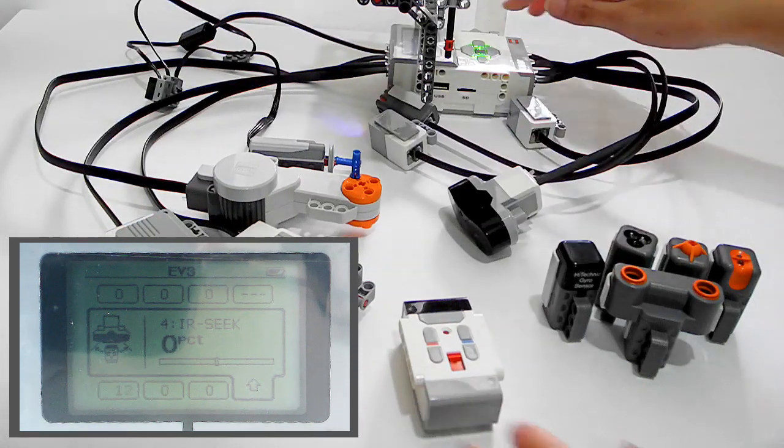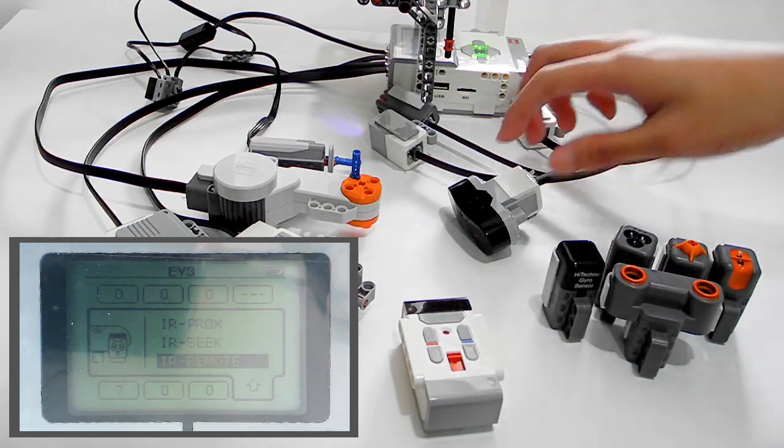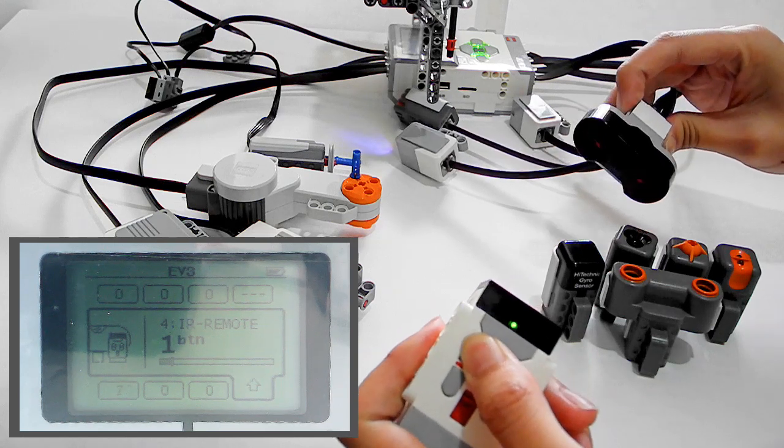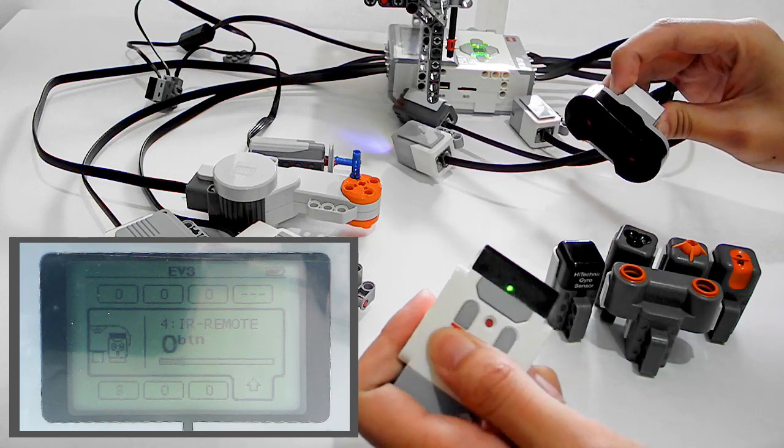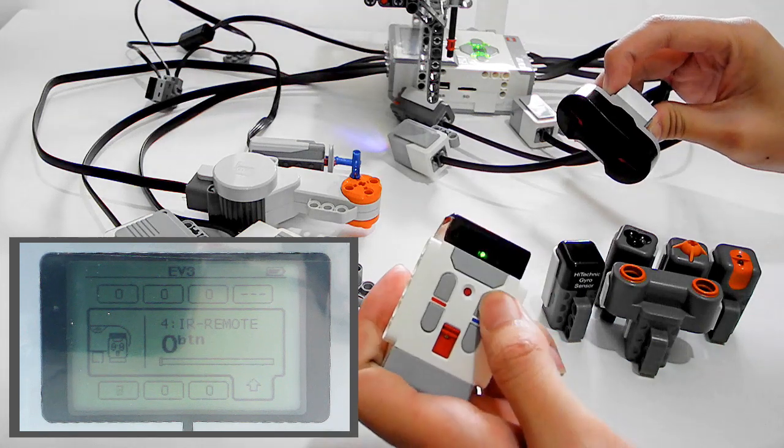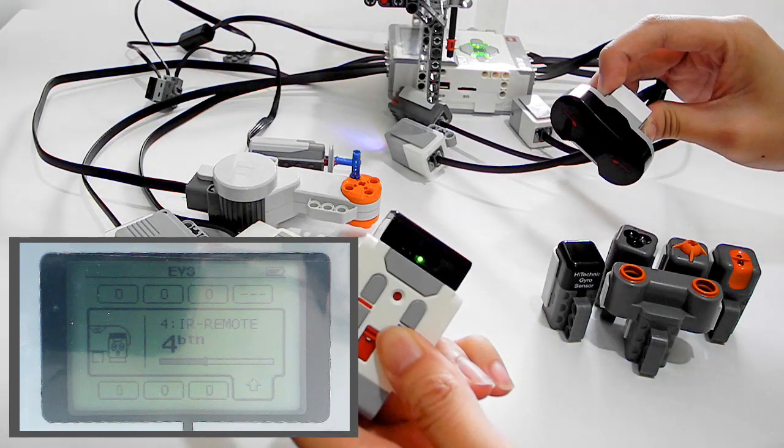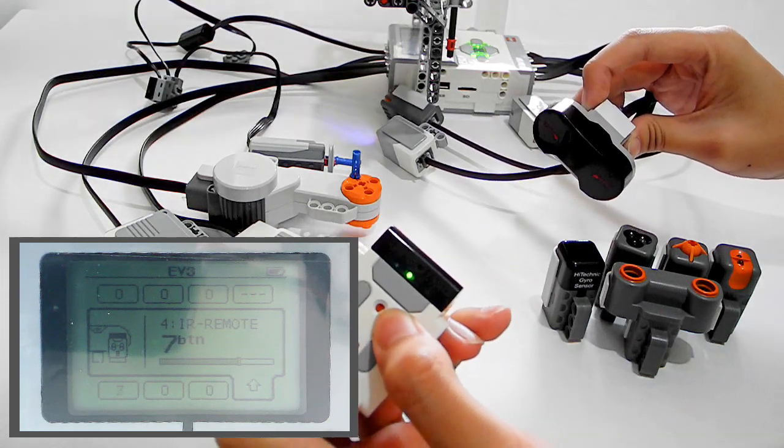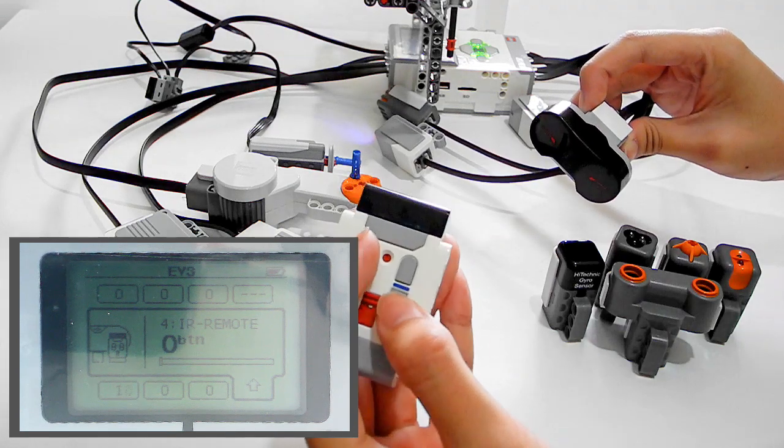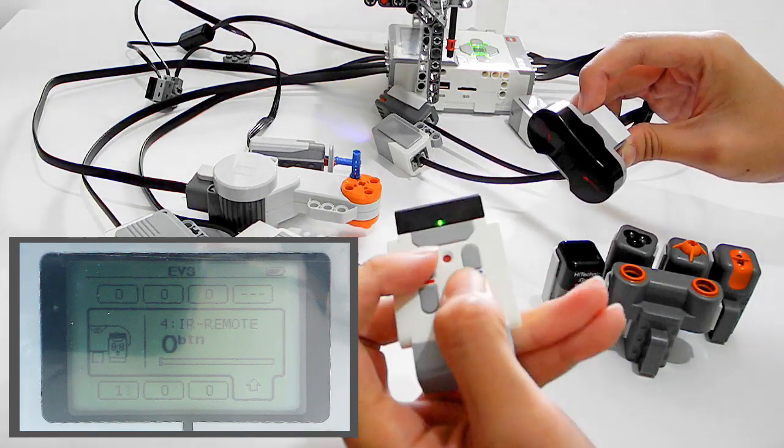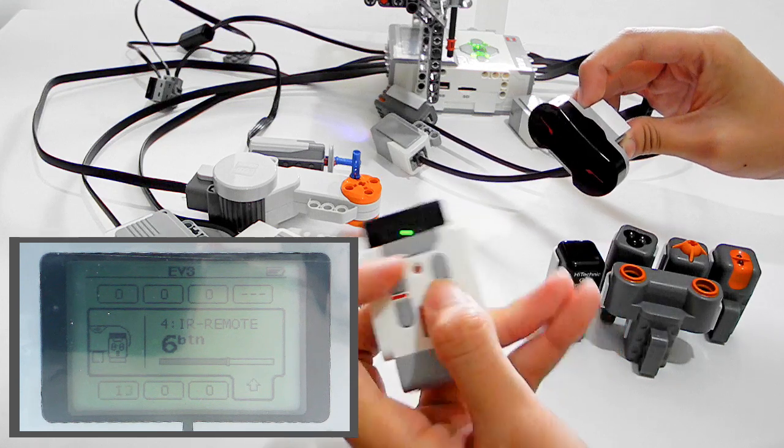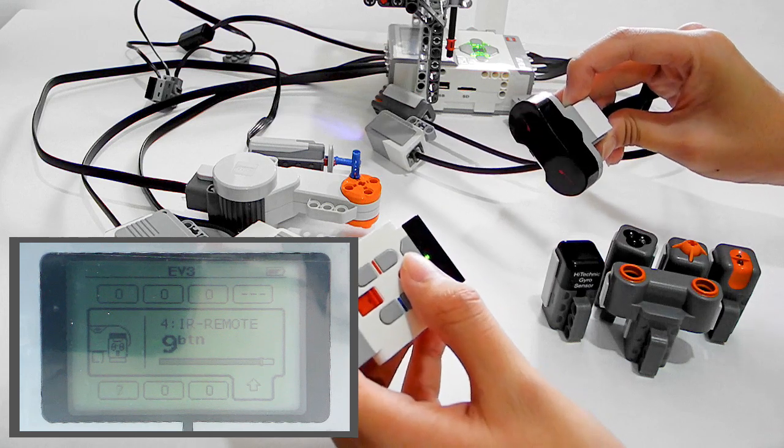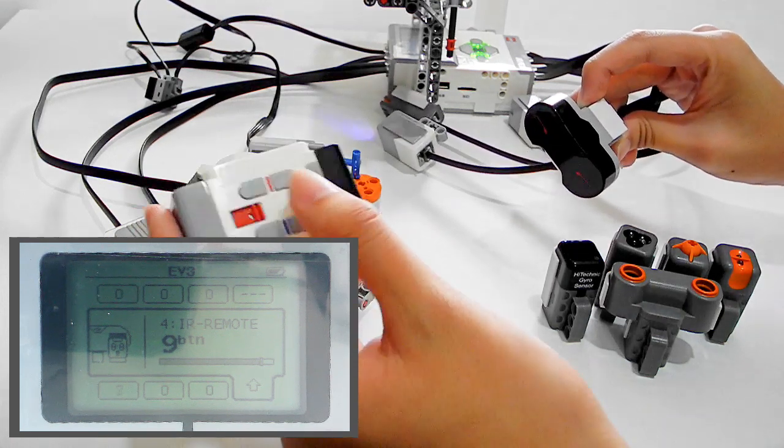And then the third mode is the remote control. I press this button, so 1, and this is 2, this is 3, this is 4. It allows two button combinations, you can see there are more than 5 buttons, and also this is one of the combination modes, and this shows 9.